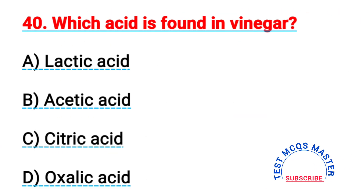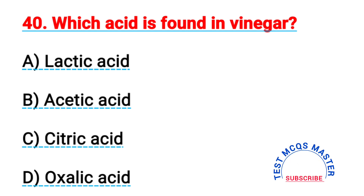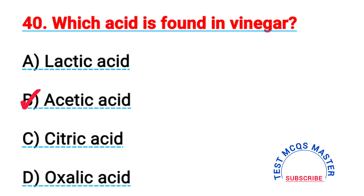Question number forty: which acid is found in vinegar? The right answer is B, acetic acid.